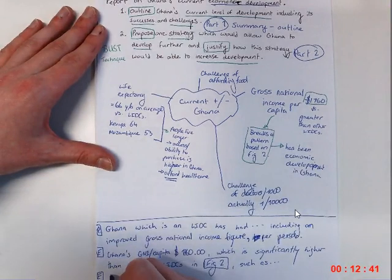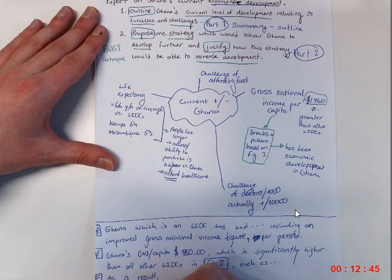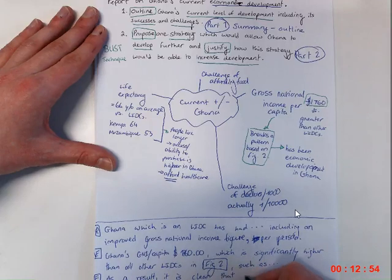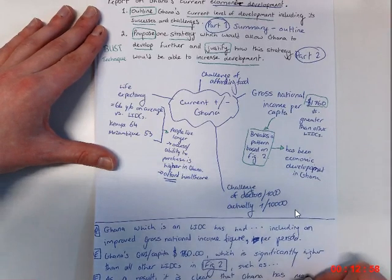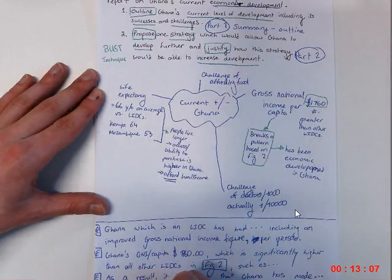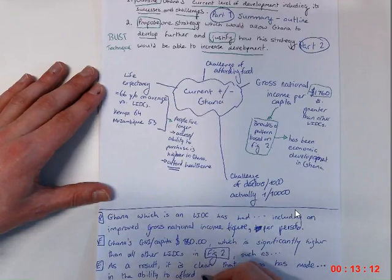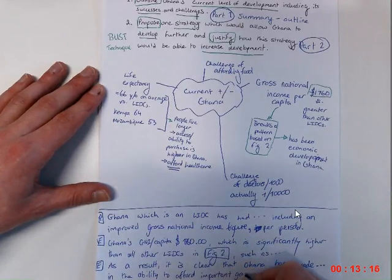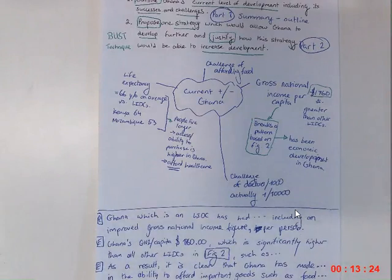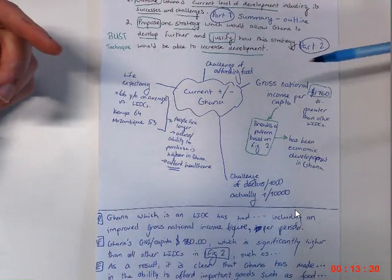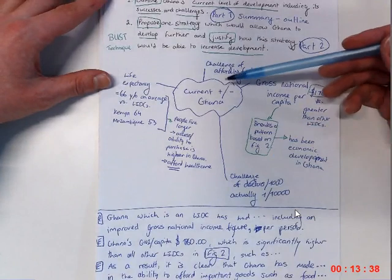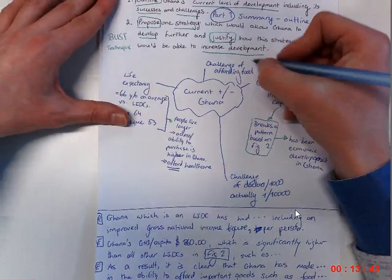Now coming down to the explanation, as a result, it is clear that Ghana has made relative improvements in its development, in the ability to afford important services, important goods, such as food. And that would be a nice structure for you to write with. And you've got your data, you've got your explanation, and then you move on to another one until you'd say have three or four of these, I would say at least three. And I would definitely not just focus on positives, you've got the negatives as well, you've got the challenges of doctors, you've got the challenges of affording food, specifically. So looking at the food security map.